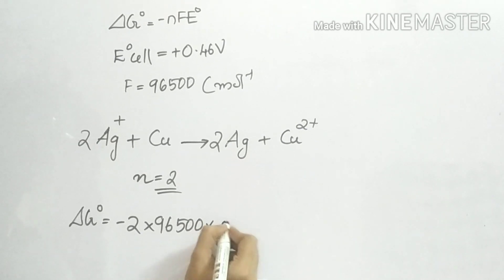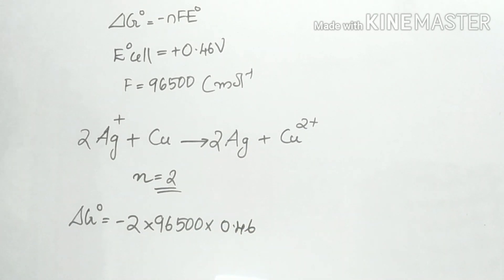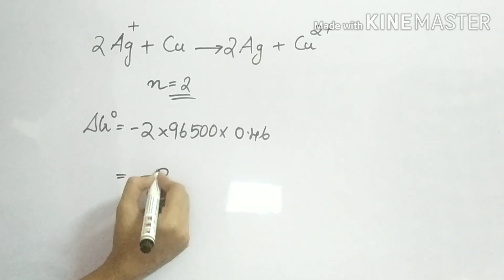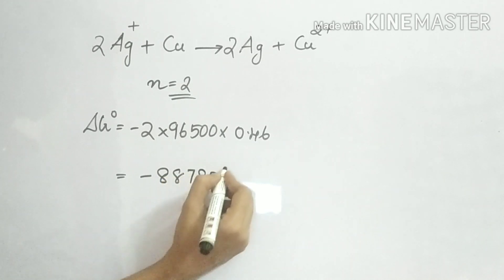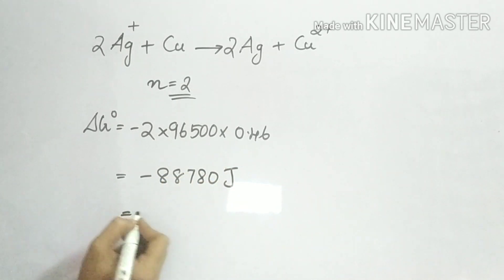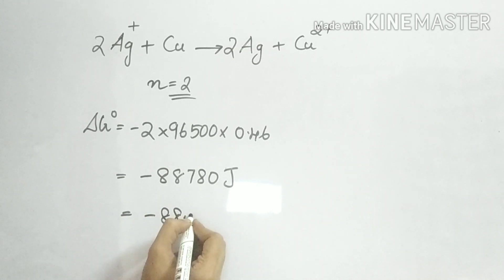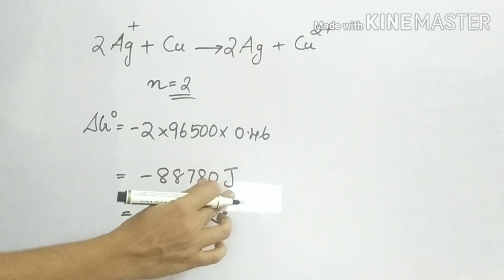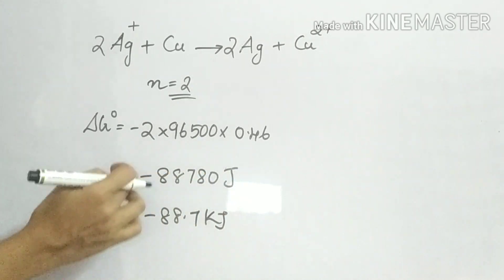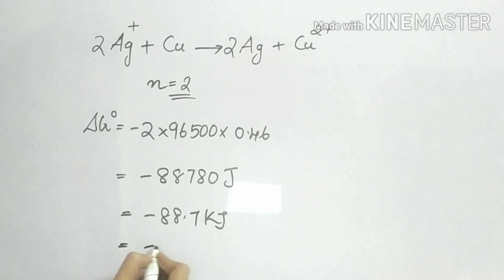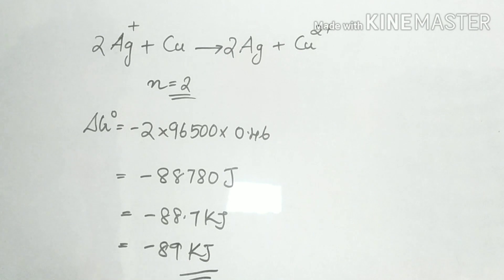Delta G0 equals minus n times 96500 times 0.46, which gives minus 88780 joules, that is minus 88.7 kilojoules, approximately minus 89 kJ. So the answer is Option E.